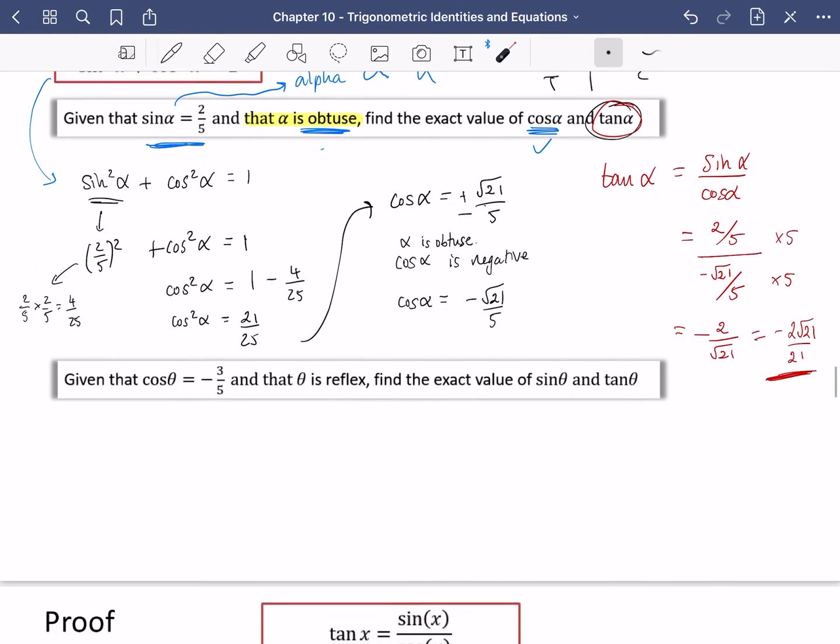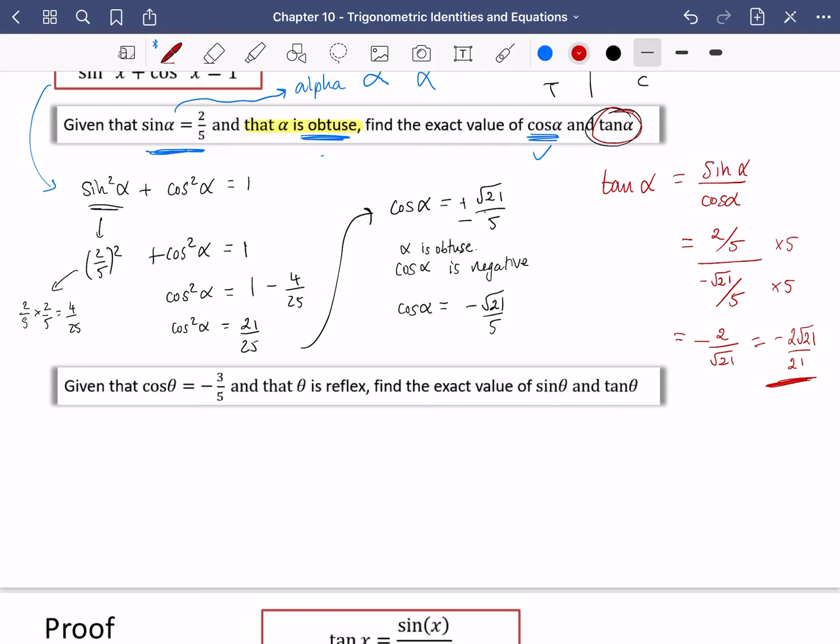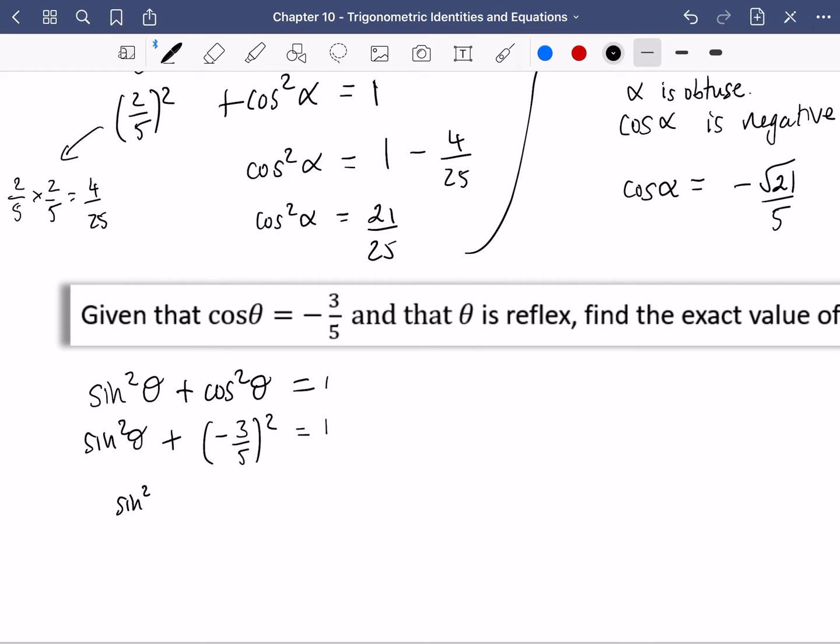Okay, let's keep going. I'm going to do one more in this section. And it says that cos theta is minus three fifths and that theta is reflex. Find the exact value of sine theta and tan theta. So I'm going to start off with my identity that sine squared theta plus cos squared theta equals one. So sine squared theta plus minus three fifths squared equals one. So sine squared theta, when you square this negative, it's obviously going to be positive, nine over 25. So sine squared theta is one minus nine over 25.